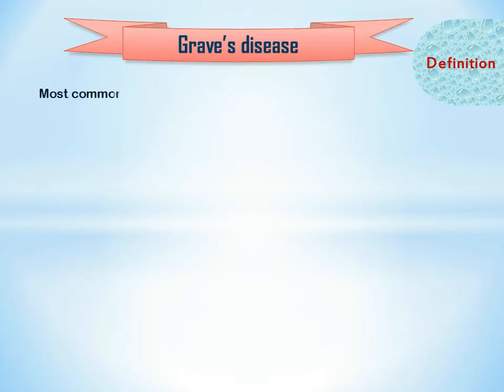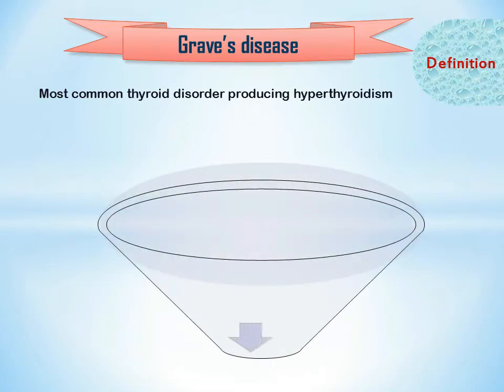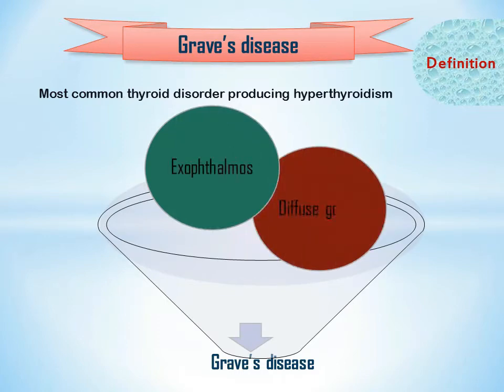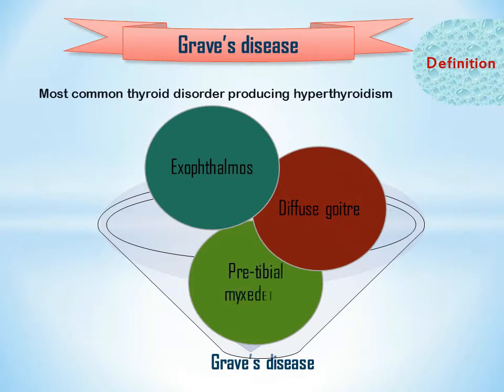Graves disease is the most common thyroid disorder producing hyperthyroidism. It is characterized by a triad of diffuse goiter, exophthalmos, and pretibial myxedema, which differentiates it from other thyroid disorders. It can occur at any age but is common between 30 to 50 years. Graves disease is considered an autoimmune disorder due to its association with other autoimmune disorders, presence of circulating antibodies, and lymphocytic infiltration of thyroid tissue. Unlike typical autoimmune disorders, here thyroid IgG antibodies stimulate the thyroid to produce more hormone.